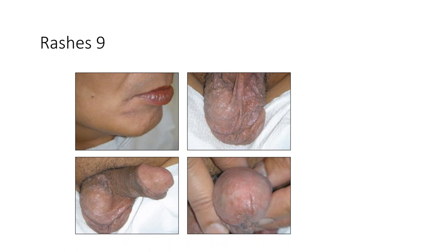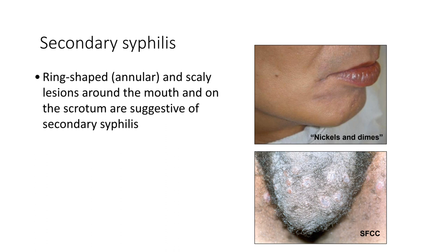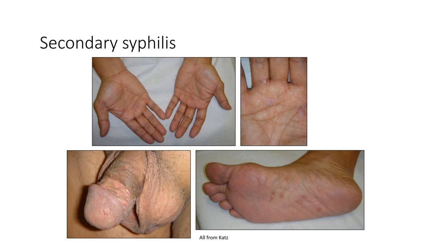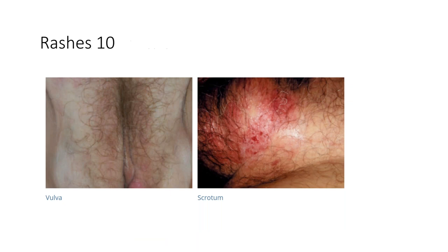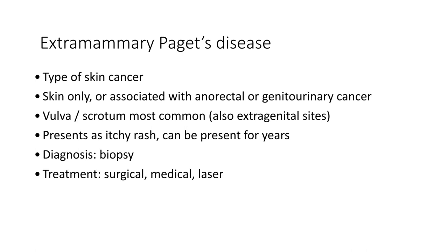Photos of a rash around the mouth and scaly material on the scrotum and glans — this is secondary syphilis. The 'nickels and dimes' appearance of circular areas around the mouth is characteristic, also visible on the genital area. Other manifestations appear on the trunk and on the palms and soles. Examples show scale or rounds of secondary syphilis on the penis with accompanying lesions on the palms and soles.